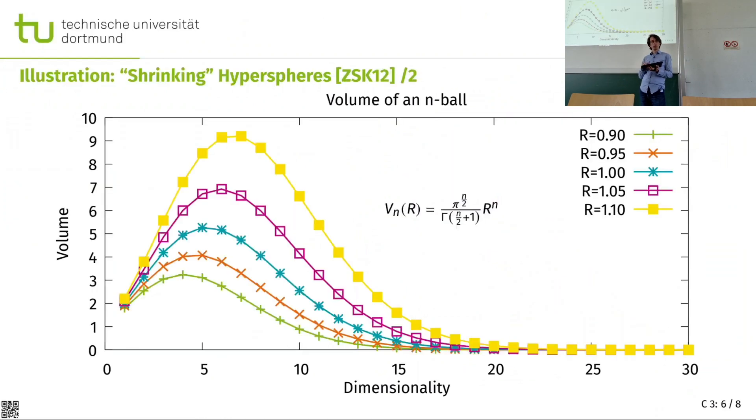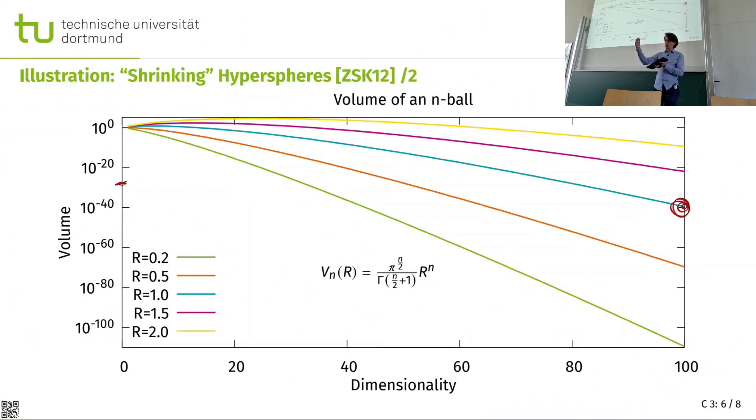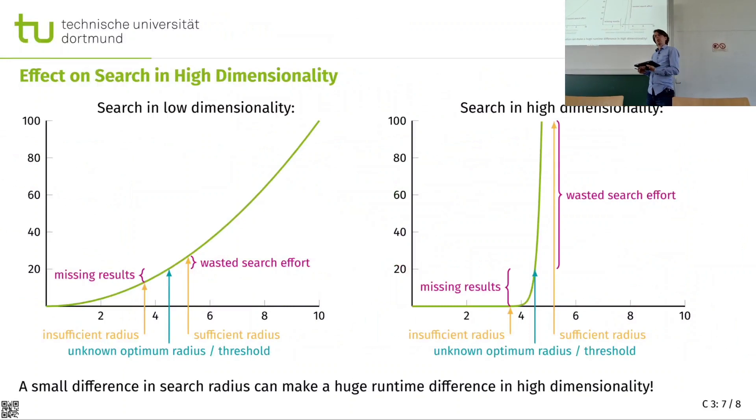And if I look at this on a log scale, going to 100 dimensions, I can see that I'm at a pretty small value of the data that is still in the unit sphere in 100 dimensions. Data from the unit cube that is also in the unit sphere. That's kind of the ratio that we are looking at at this point. And that has effects on all types of algorithms.